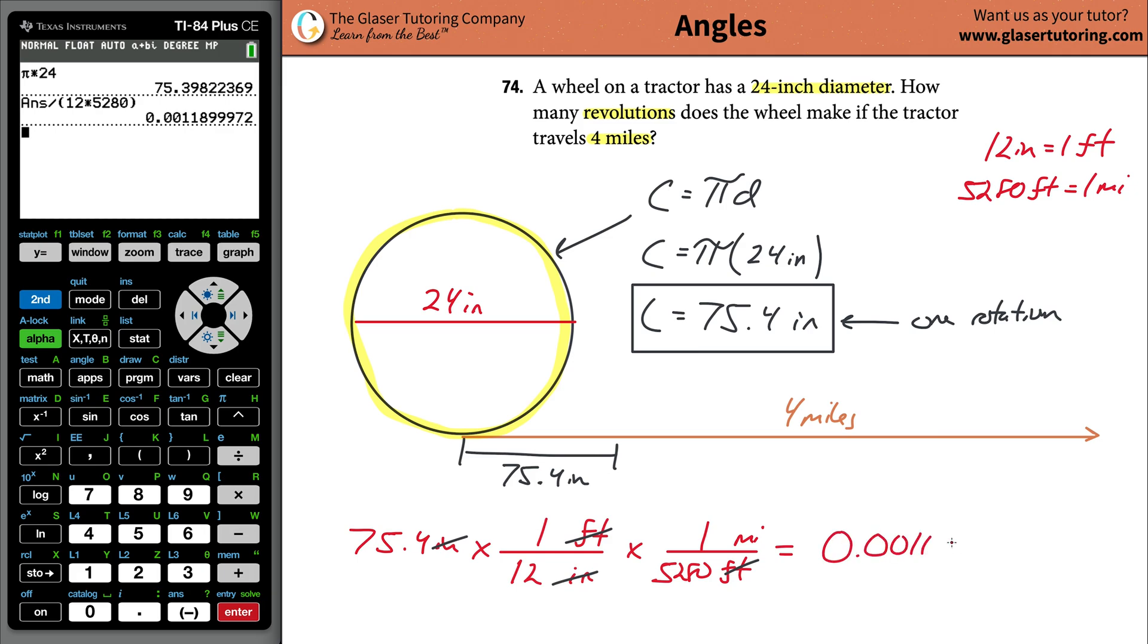That should make sense, right? This is almost like saying one-thousandth of a mile is equivalent to 75.4 inches. I think that should make some intuitive sense. With this value in hand, we can now finally find the number of revolutions.